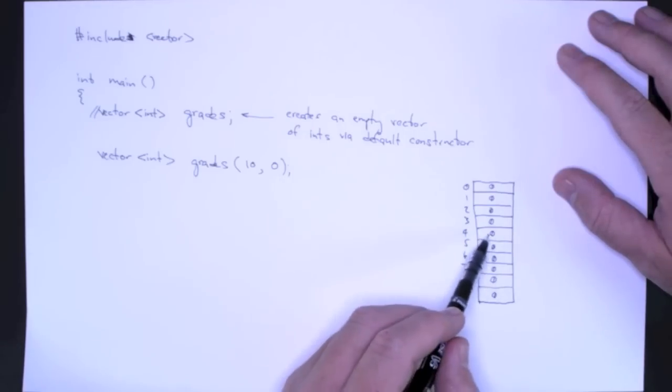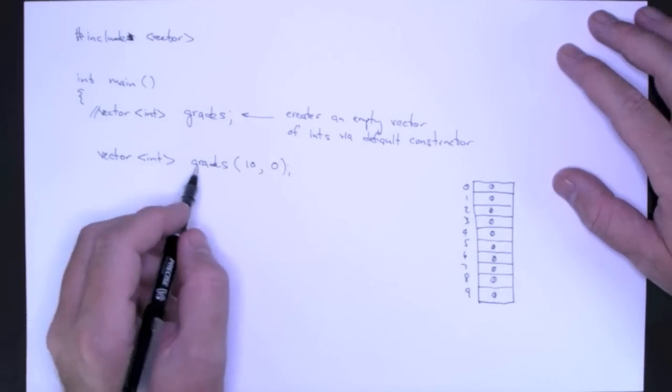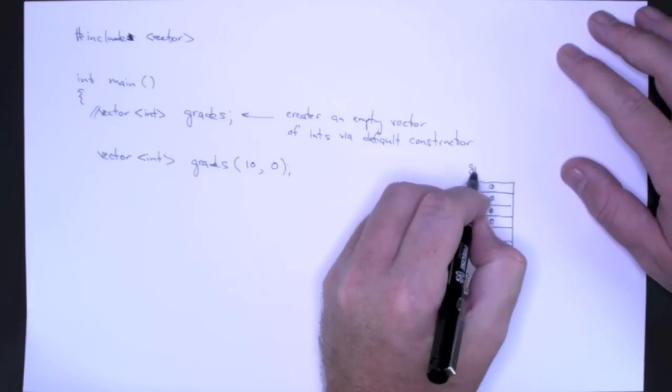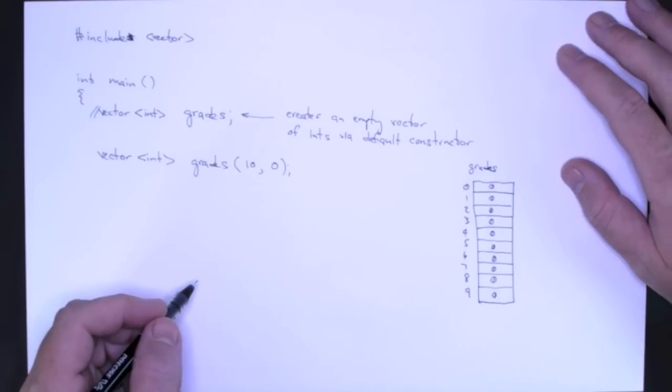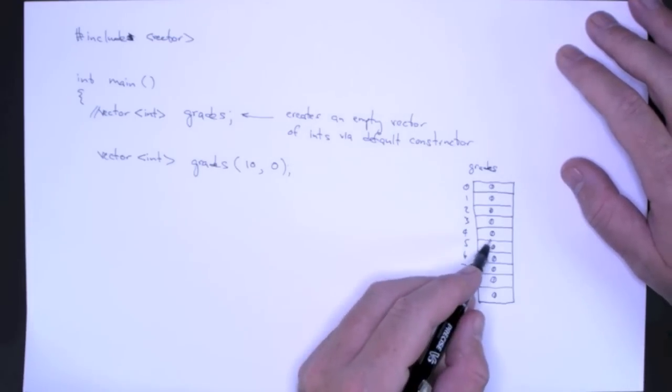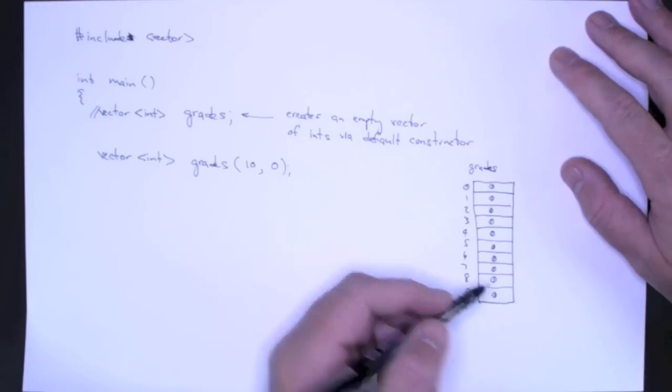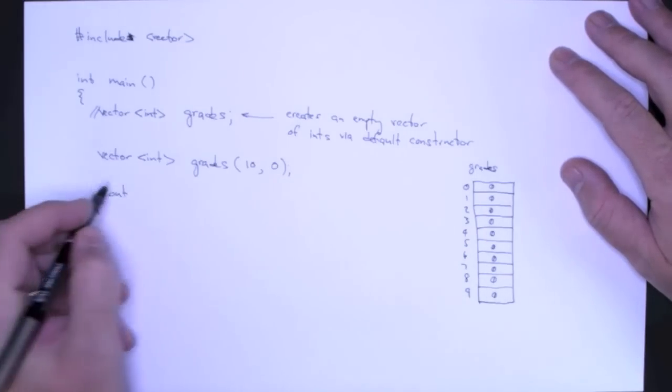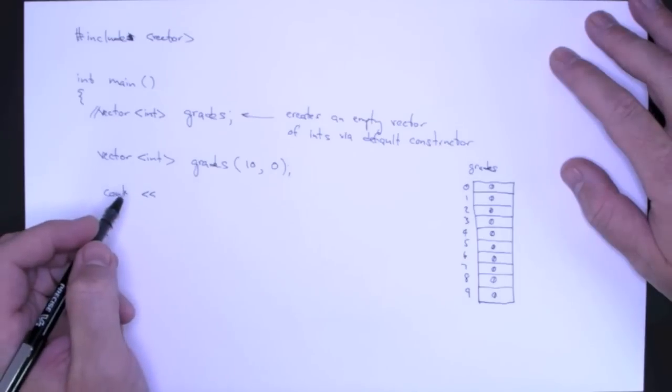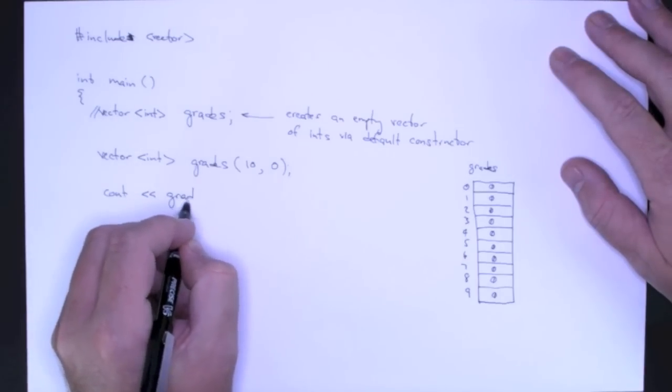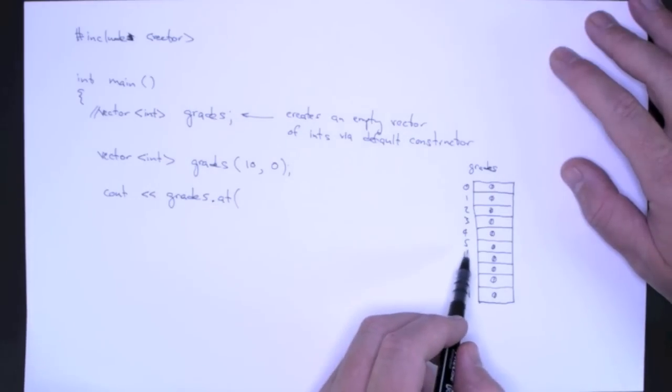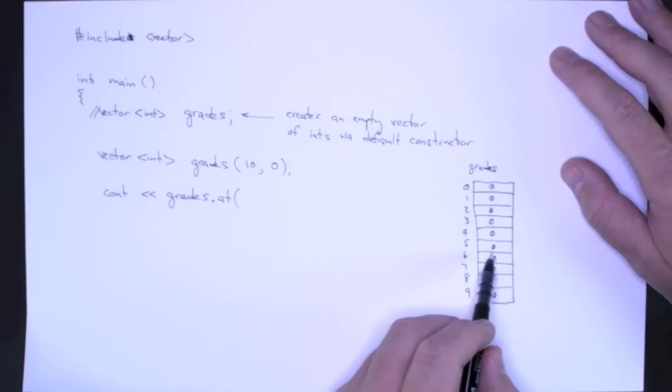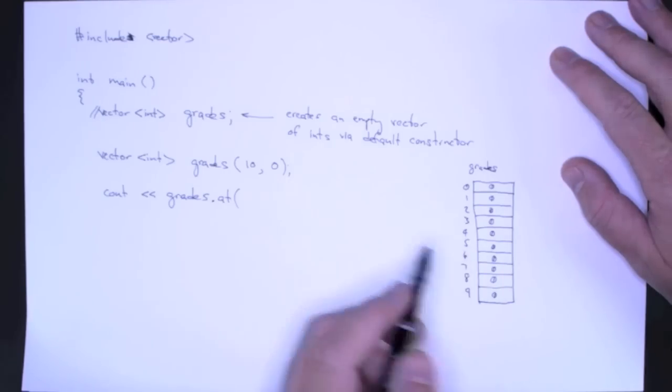Now, there are two ways to refer to a given, so keep in mind that this whole thing is the grade. The grade's object consists of all 10 of these integers. And we can refer to an individual integer. So let's say if I say Cout, and there are two methods for doing this. There is the at method, so if I'm talking about a grade at a particular position or location, I simply give that value's position, so 5 for example.